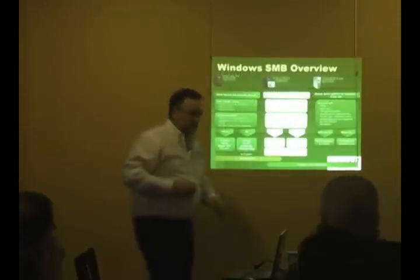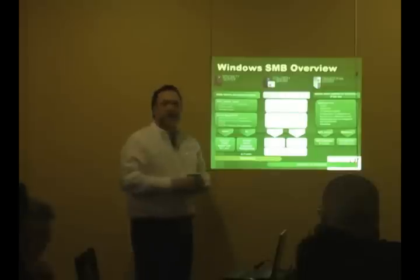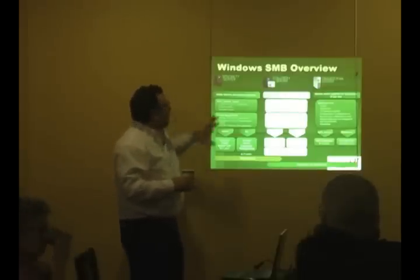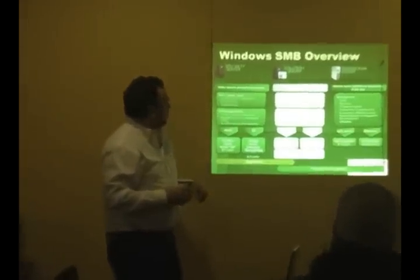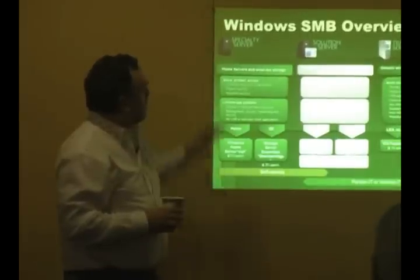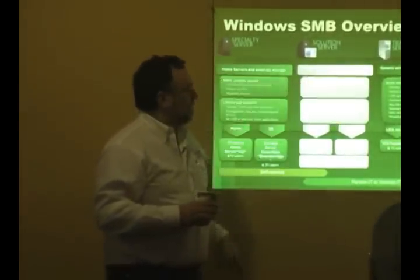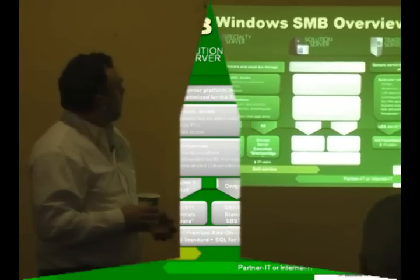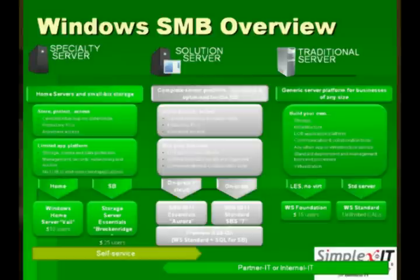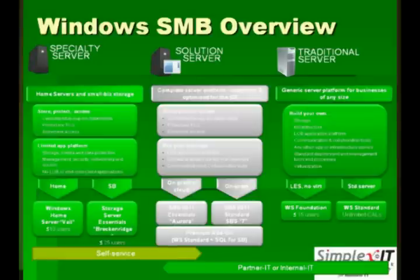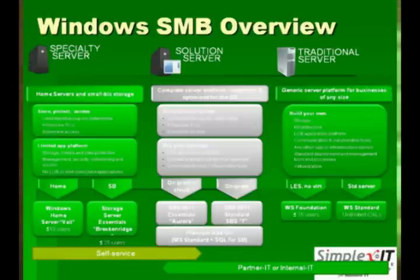This is a slide I borrowed from a presentation in Germany, strangely enough. There are three layers of options here for a smaller organization. First of all, a specialty server — meaning it does very little, but hopefully does it very well. That would be your Windows Home Server, or a NAS device that allows multiple people to store data up on the network — a network-based storage device, but really not doing much else beyond that.